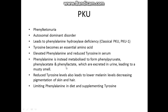Phenylalanine is the main pathway for producing tyrosine, so you don't get much of it. You end up with tyrosine becoming an essential amino acid and elevated phenylalanine builds up as it can't be broken down. Phenylalanine is instead metabolised to phenylpyruvate, phenyl acetate, and phenyl lactate, which are excreted in the urine causing a musty smell. Reduced tyrosine levels also lead to lower melanin levels, lowering the pigmentation of skin and hair.